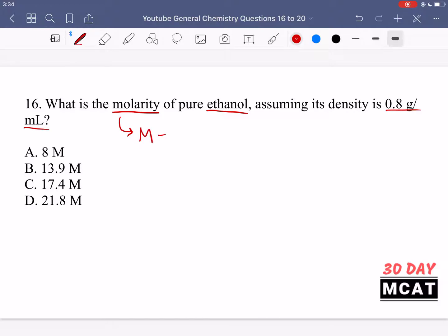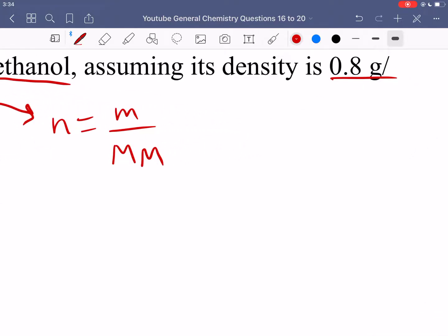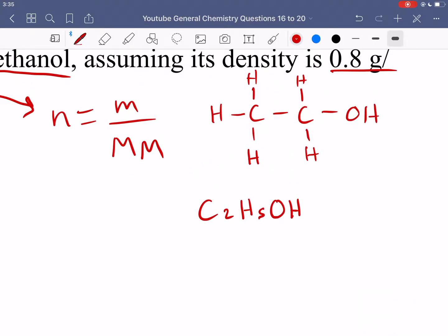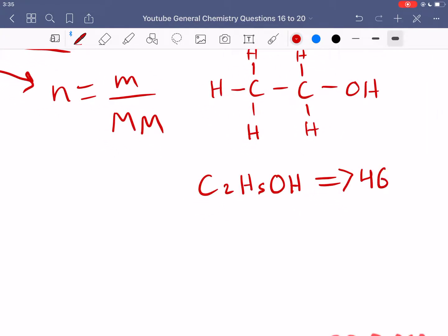We're looking for molarity. The symbol for that is M and the equation is moles over liter. Ethanol has two carbons with one having an OH group and the rest are hydrogens. Therefore its chemical formula is C2H5OH and you should be able to use this to get the molar mass which is 46 grams per mole.